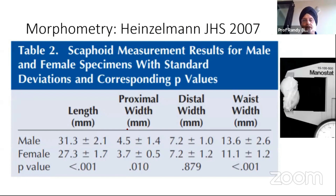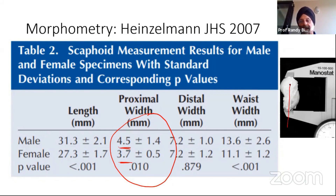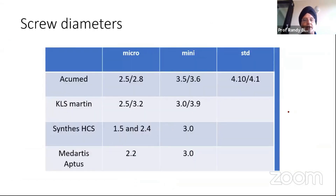We did some studies previously on the measurements of the scaphoid. One important thing to remember when you're looking at the proximal pole and going to put a screw across that bone: in a female, the bone is only about under four millimeters wide, and in a male, it's just under five millimeters wide. So whatever screw you're putting in from a proximal to distal fashion, you have to have an idea of how big that bone is so that your screw doesn't split that fragment as you're inserting it in an antegrade fashion.